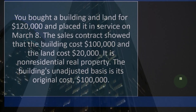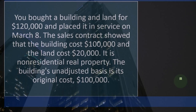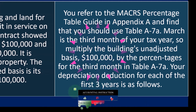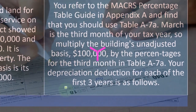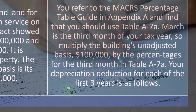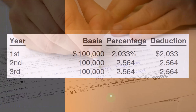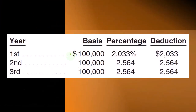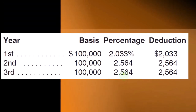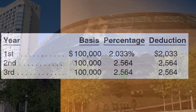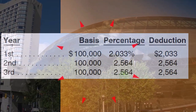This is non-residential real property. The building's unadjusted basis is its original cost, $100,000. You refer to the MACRS Percentage Table Guide in Appendix A and find you should use Table A-7A. March is the third month of your tax year, so multiply the building's unadjusted basis, $100,000, by the percentages for the third month in Table A-7A. The tables reflect the mid-month convention used for real estate, so you need to determine which month the property was purchased to use the proper table.